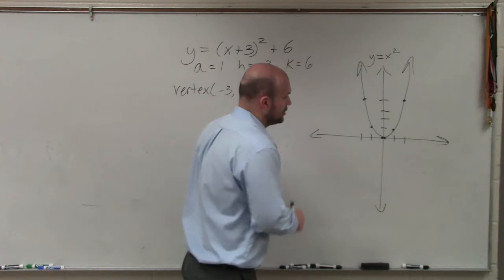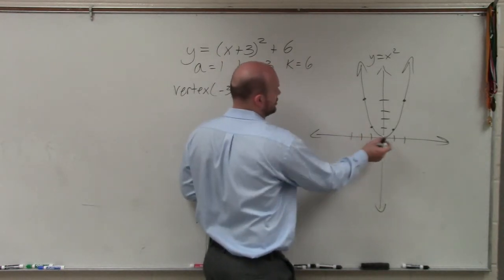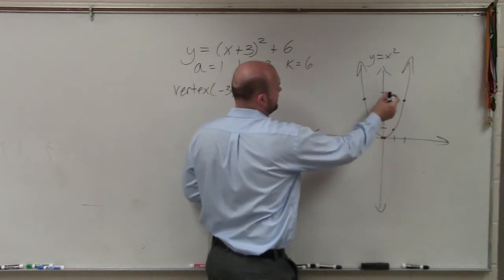So what I'm going to do is I'm going to go over to negative 3: 1, 2, 3, and then go up 6: 1, 2, 3, 4, 5, 6.